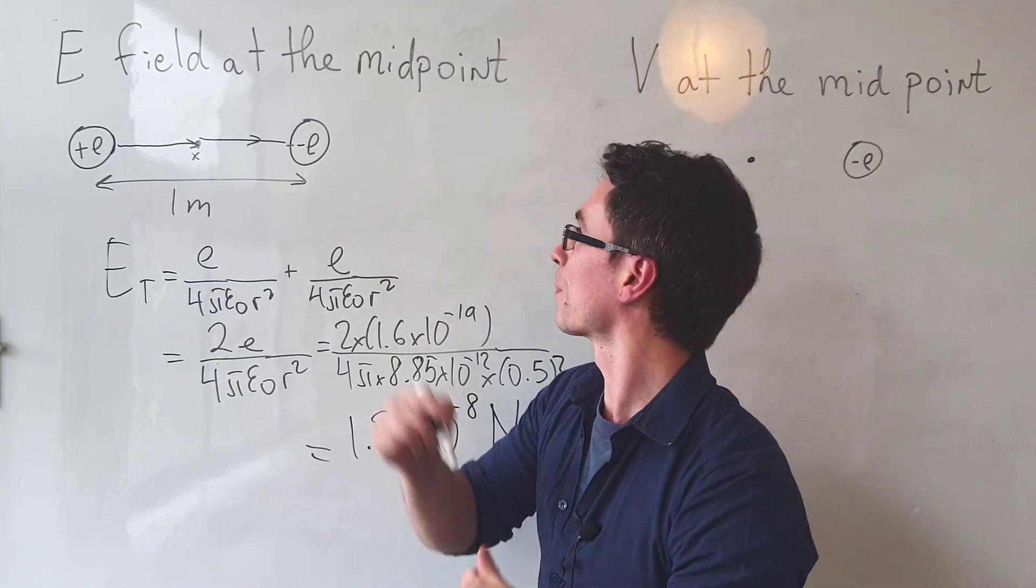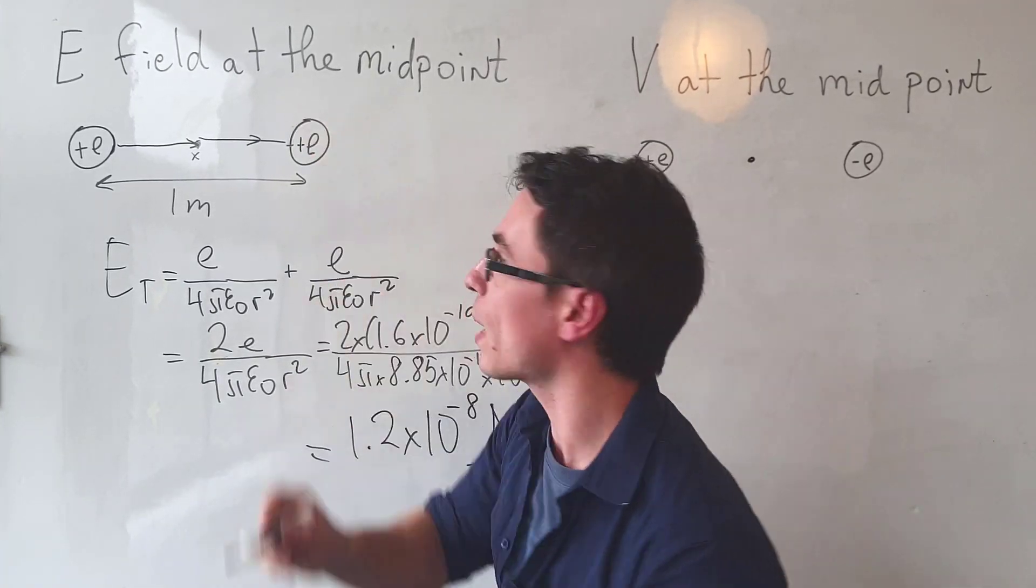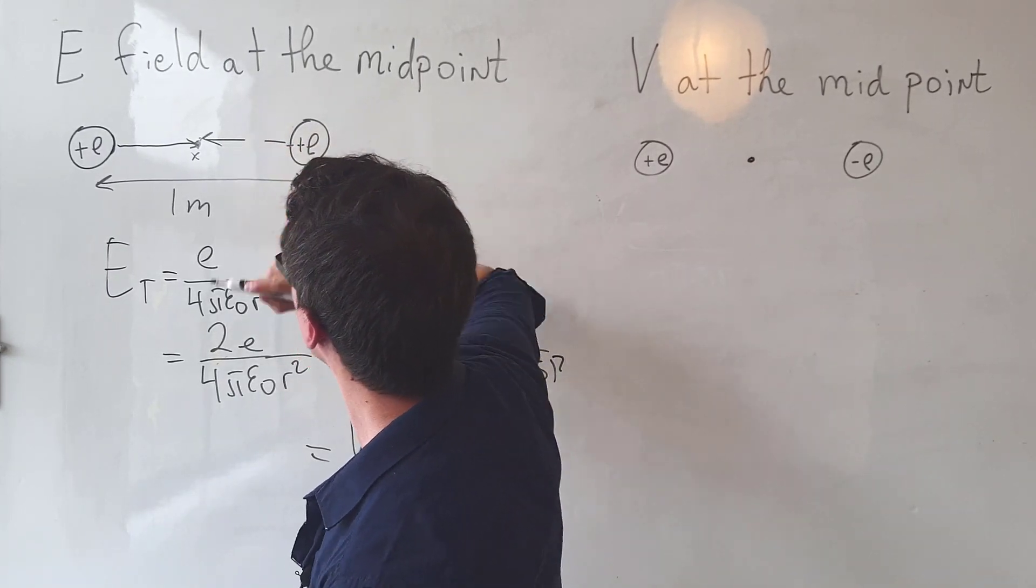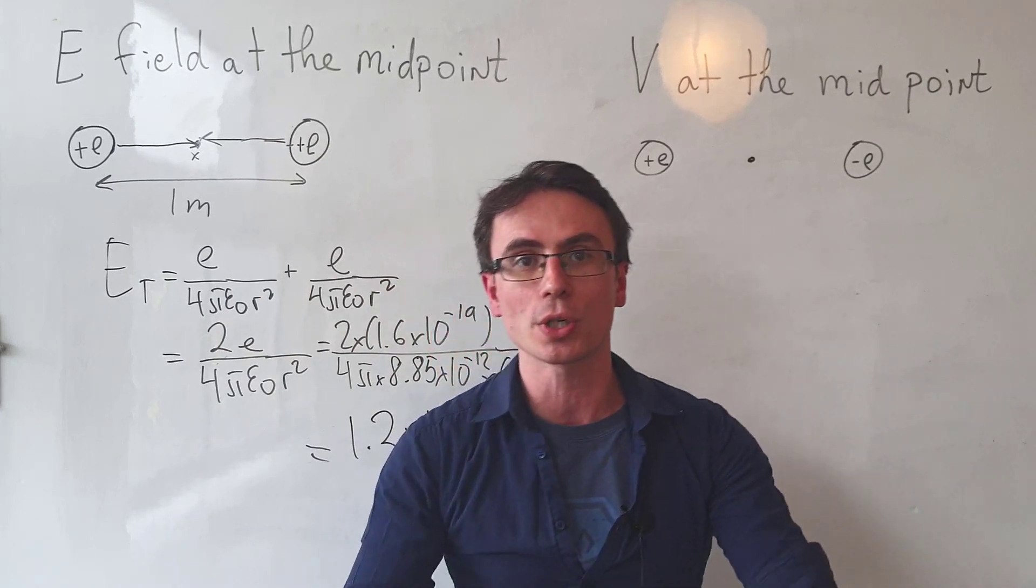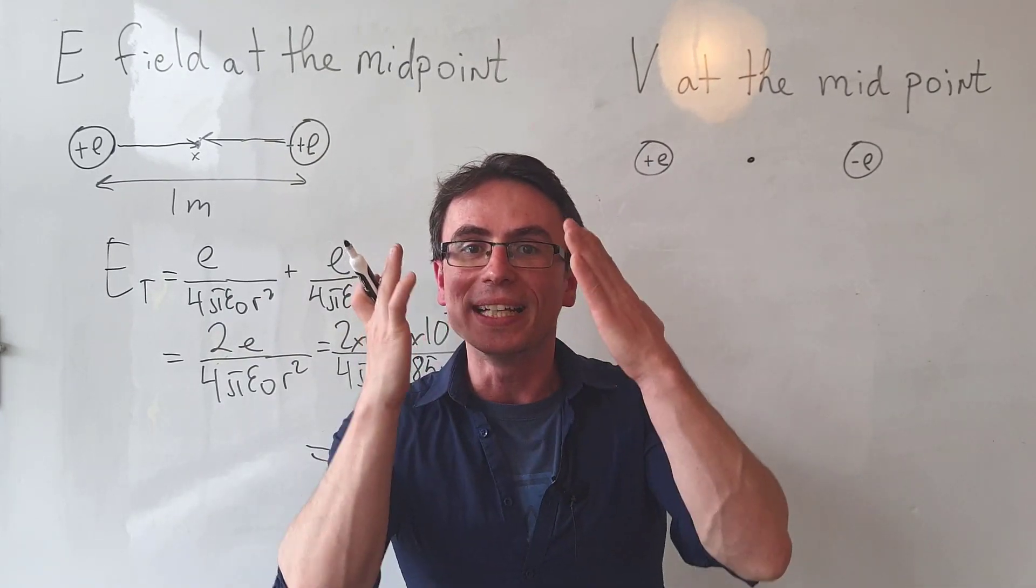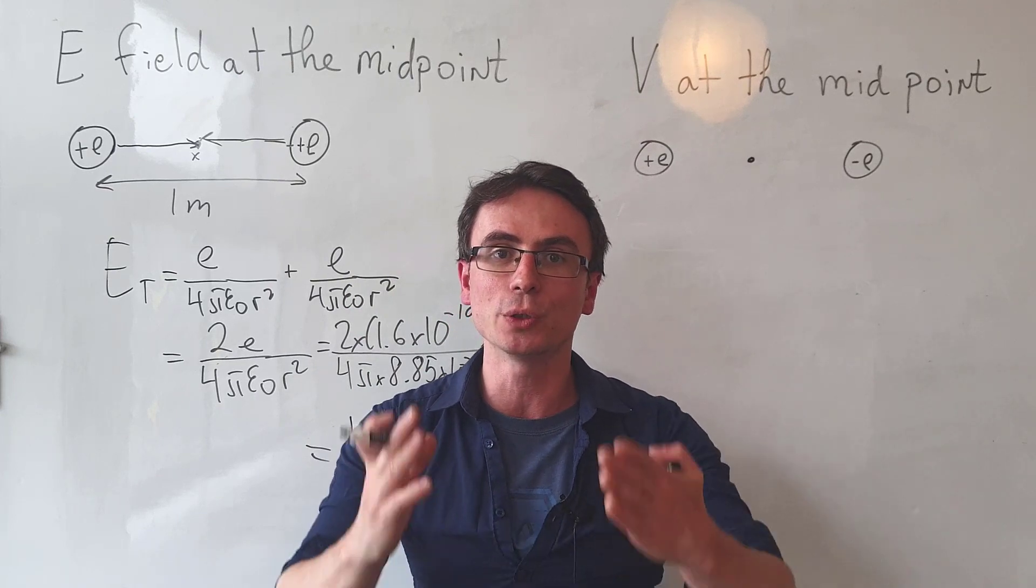Notice something really interesting. If I was to just change this to a positive charge, the two electric fields will now be going in opposite directions and the two vectors would cancel out, leaving a net electric field of zero.